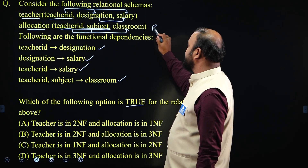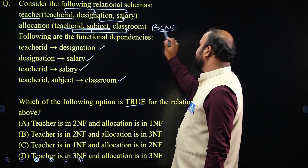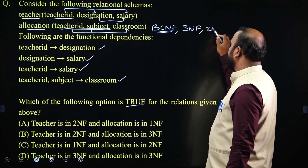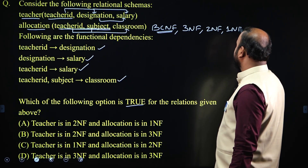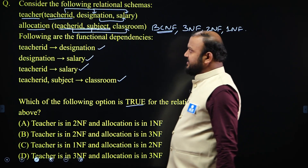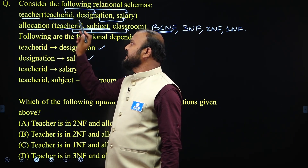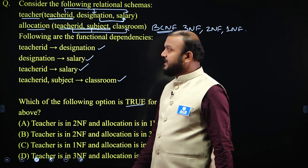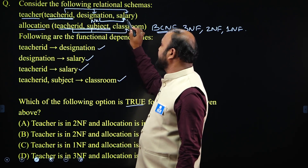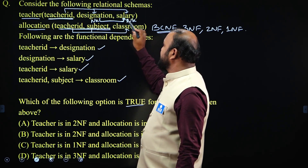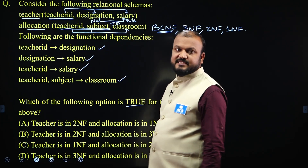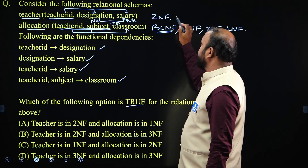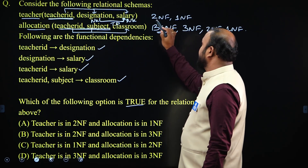Because in the allocation table there is only one dependency and its left-hand side is a super key, we can call allocation is in BCNF. If a relation is in BCNF, it is also satisfying 3NF, 2NF, and 1NF. Looking at teacher, the primary key is teacher ID and we have the dependency designation → salary. Designation is a non-key and salary is a non-key — this non-key to non-key relationship is called a transitive dependency. If transitive dependencies are present, the relation is in 2NF, and if it is in 2NF, it is also in 1NF.